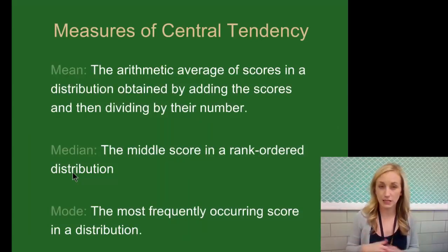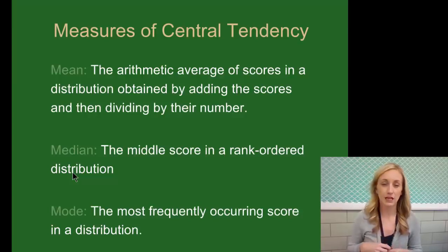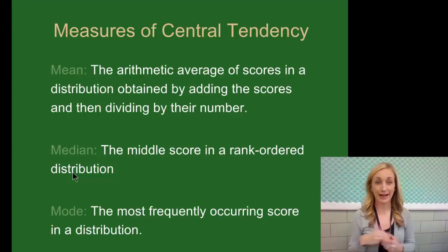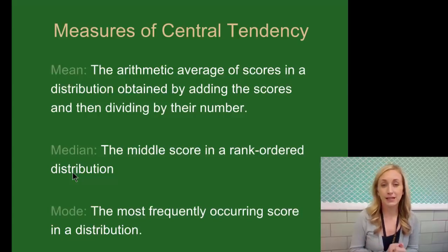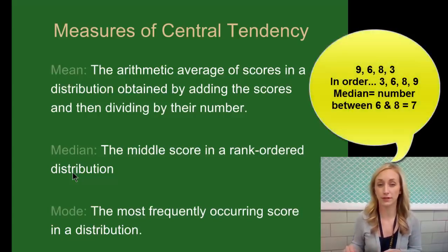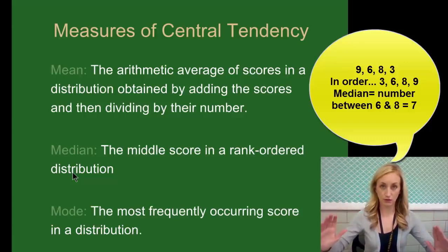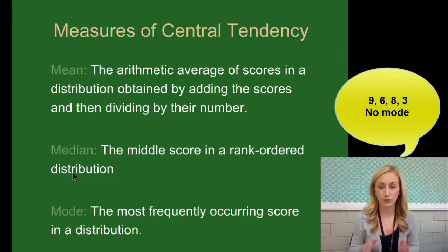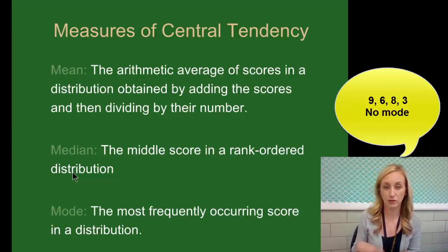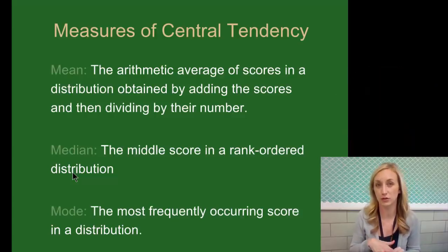Measures of central tendency in statistics — this is hopefully just a reminder from most of your math classes. The mean is the average of scores in a distribution; you add them up and divide by the total number of numbers. The median is the middle score in a rank-order distribution — you put numbers in successive order and find the exact middle number. The mode is the most frequently occurring score — mode, most; median, middle.